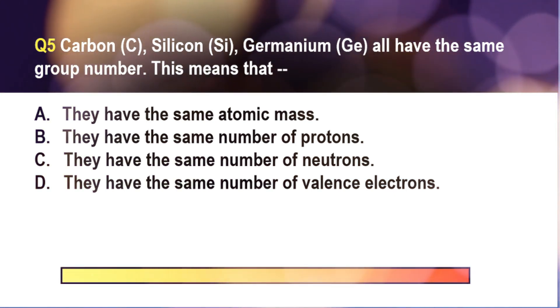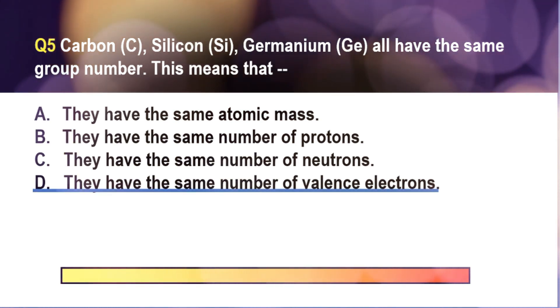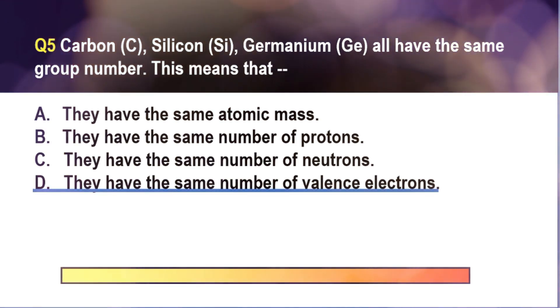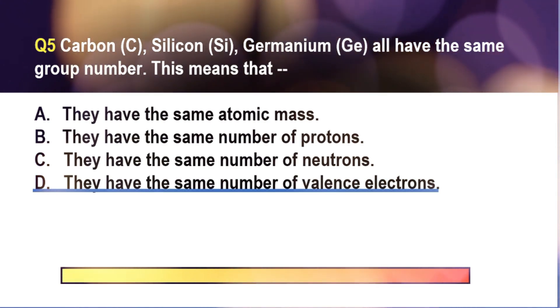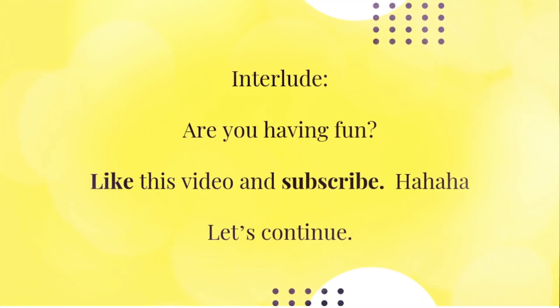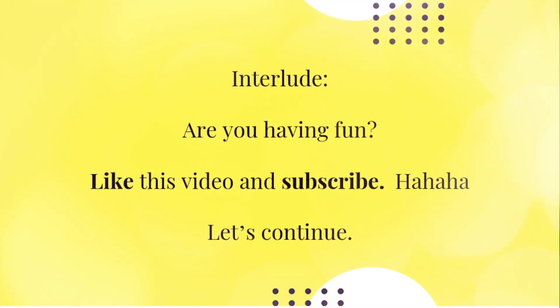The correct answer is letter D. Carbon, silicon, and germanium all belong to the fourth group, but you don't have to remember that fact. What you need to remember is a concept that if the elements are in the same column or group number in the periodic table, then they have the same number of valence electrons, which means that they have the same number of electrons in their outermost shell.